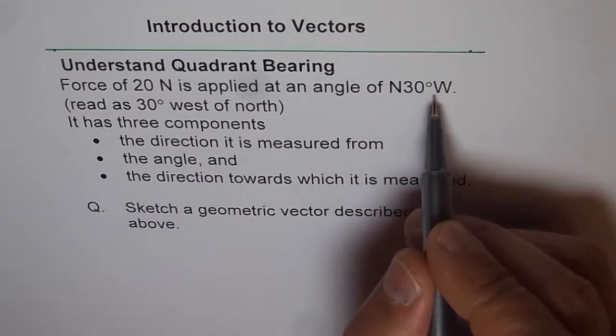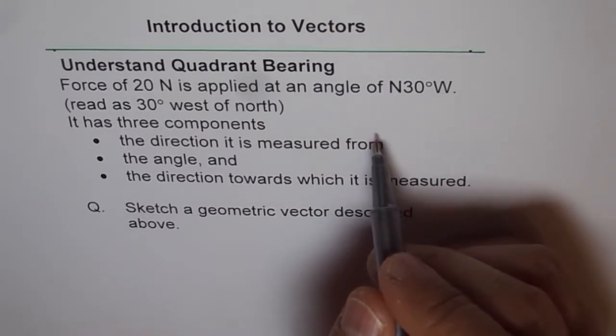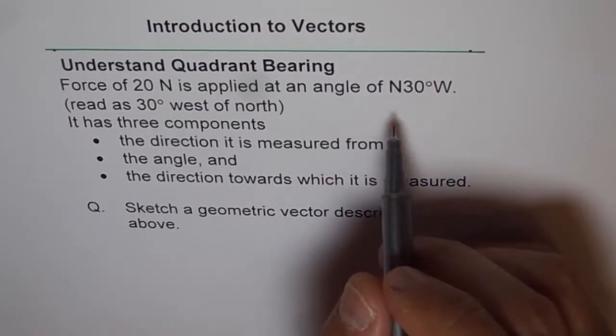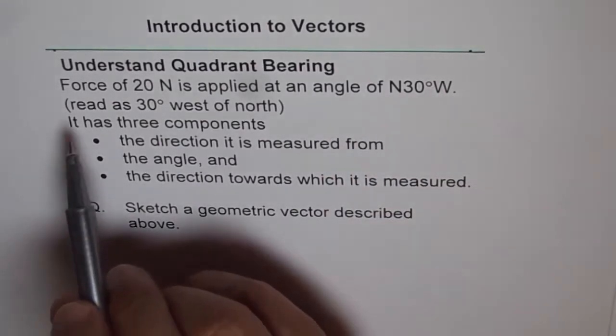It may be N 30 degree west but it should be read as 30 degrees west of north. So let's read this statement once again.